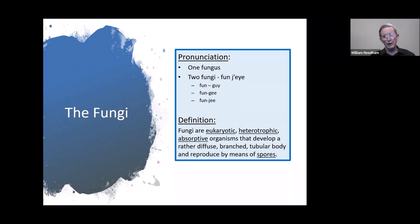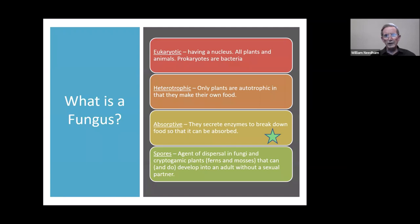Most people don't really realize what a fungus is. The four underlying terms come from the official dictionary definition. Eukaryotic means having a nucleus. Heterotrophic means it does not make its own food like plants do. Absorptive is the most important and most unique feature of fungi. And the last is that it reproduces by spores. Those are the four rules to be a fungus.